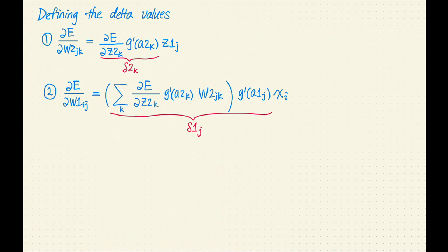I've denoted the two delta values as delta 2 sub k and delta 1 sub j. Note that delta 2 sub k appears inside the expression of delta 1 sub j. If we rewrite the delta expression separately, we get the delta expressions that I showed you on the previous slide.